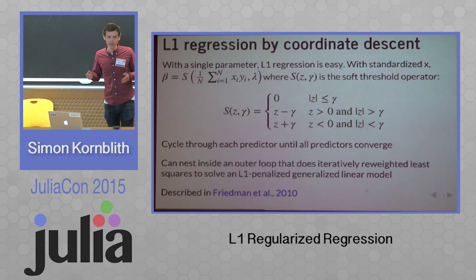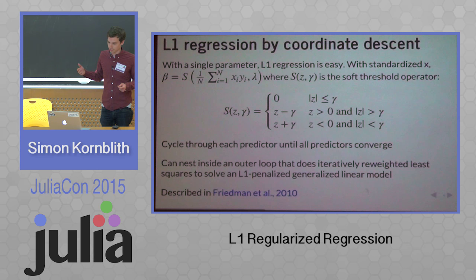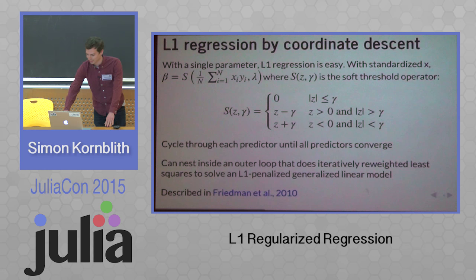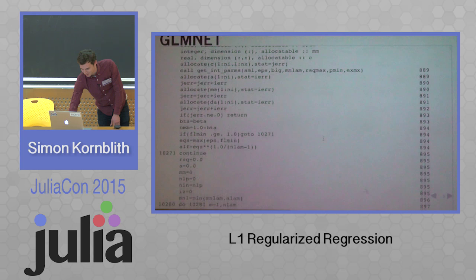You can actually solve more than just a least squares problem — you can solve a generalized linear model by nesting the inner loop that does coordinate descent inside an outer loop that does iteratively reweighted least squares, basically Newton's method. This is described in a very highly cited paper, and a lot of people use the code they provide. The code is very fast, which is why a lot of people use it. But the code doesn't look that nice.